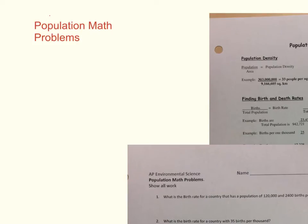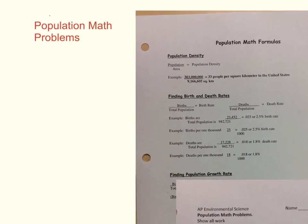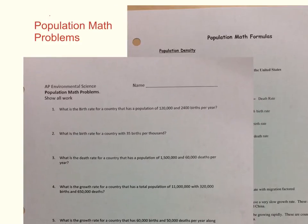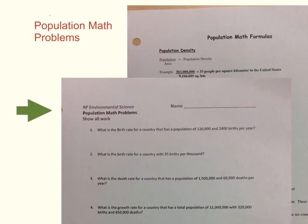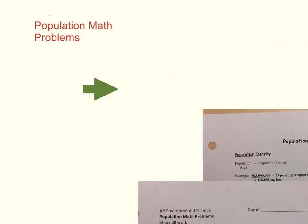I'm going to go over the population math problems. First, get out your population math formulas to access and reference during the paper. Our first problem is: what is the birth rate for a country that has a population of 120,000 and 240 births per year? To solve this, we look at the birth rate formula, which is births over total population.